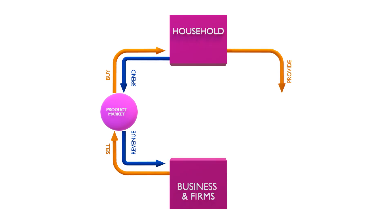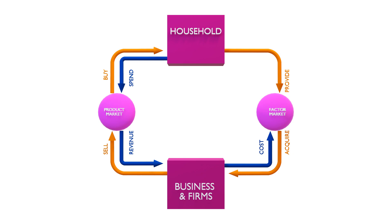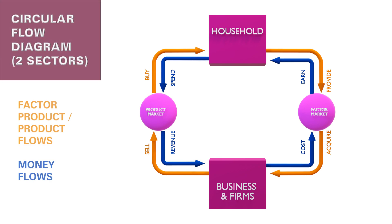So households have to work. They provide factors of production — land, labor, capital, and entrepreneurship — in the factor market, and usually they offer labor. This helps businesses and firms acquire the required factors of production to produce goods and services. In return, since businesses incur costs, households earn income, completing the two-sector circular flow.